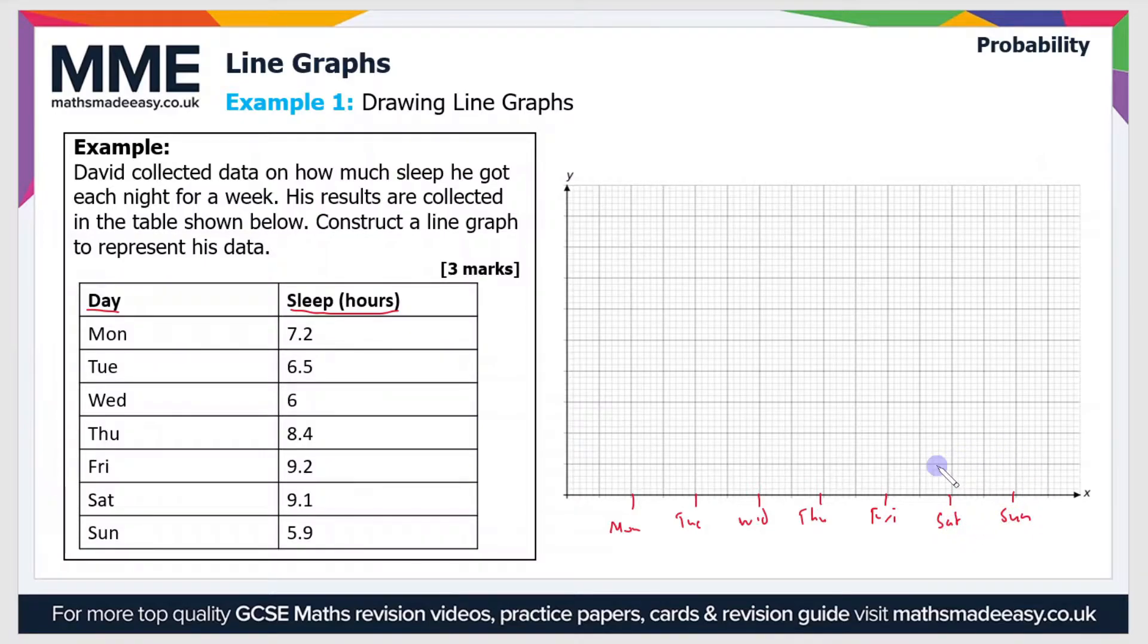And then on the other scale we can see that the largest data point is 9.2, so we need a scale that's going to allow us to go up to that. There's ten squares on this y-axis, so I'm just going to have one square representing one hour.